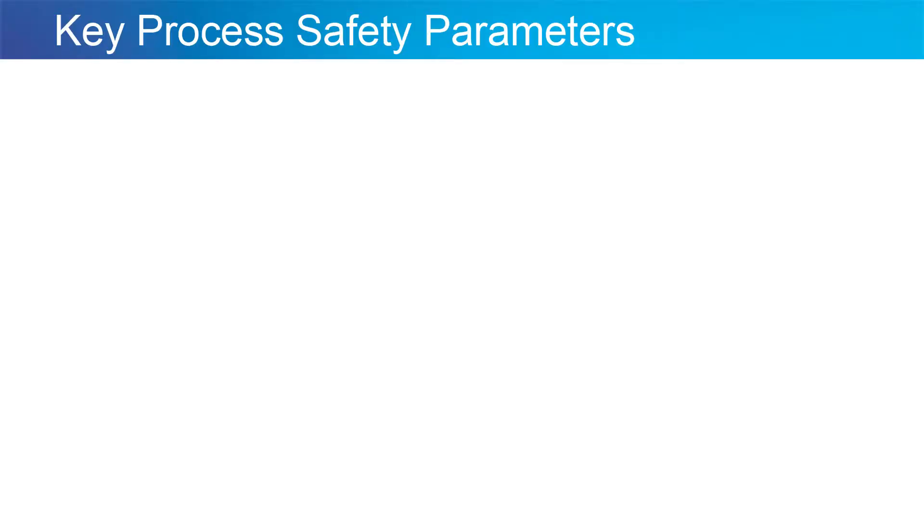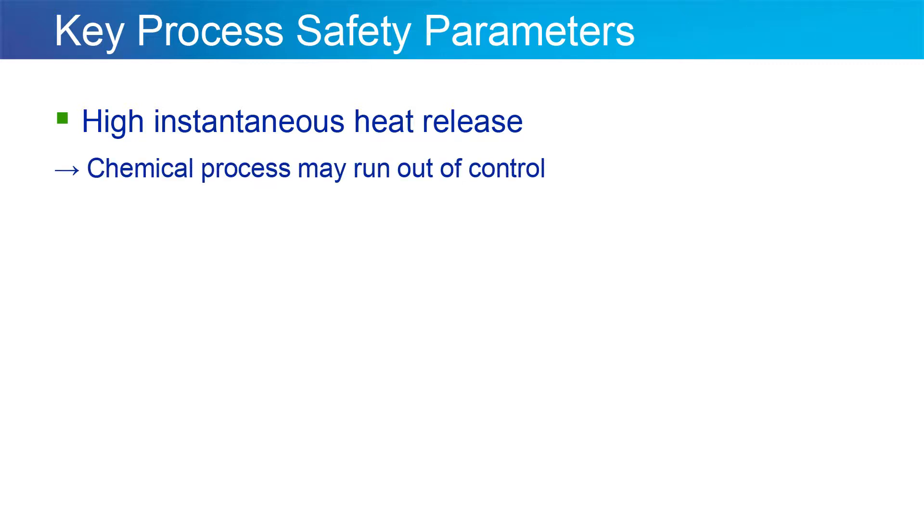The first one is to determine when you have a high instantaneous heat release. If it's not properly controlled or checked on a larger scale, you may get the chemical process to run out of control.